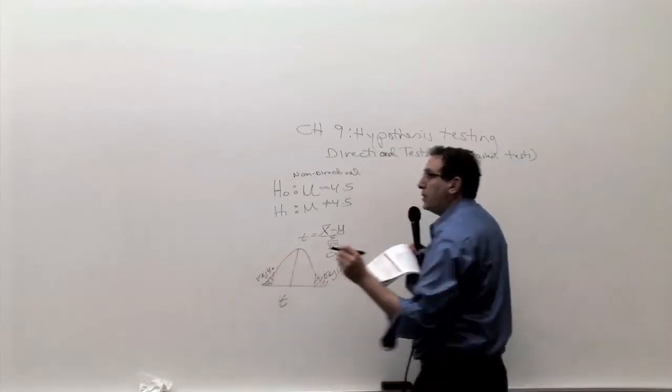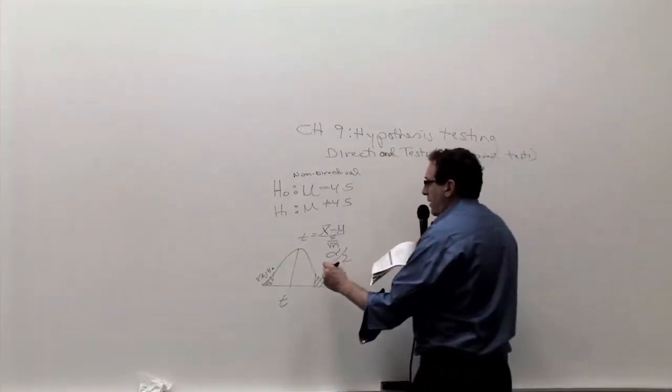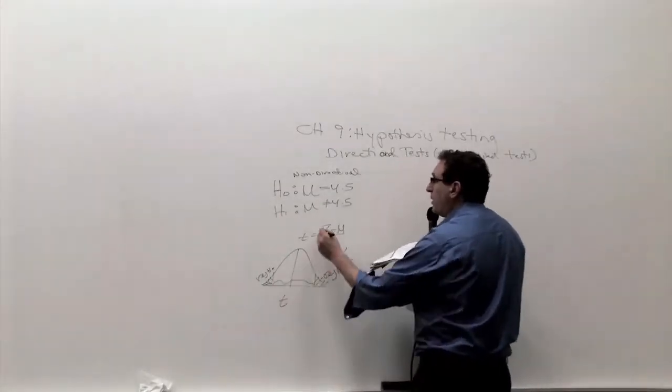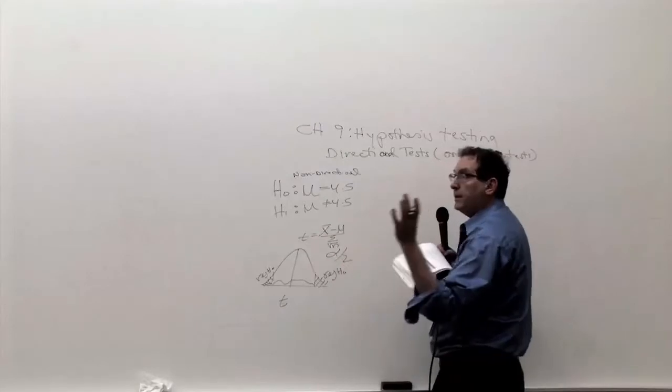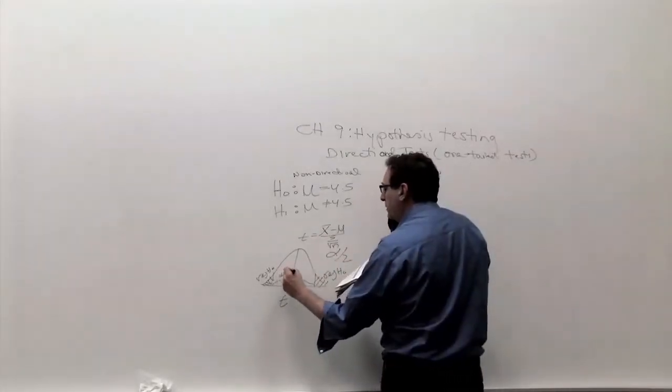And since we're trying to keep the chance of a type 1 error at exactly 5%, we have to chop the alpha in half. And of course, if you end up with an x-bar close to 4.5, which means the difference is close to 0, then we do not reject H0. It's perfectly logical.